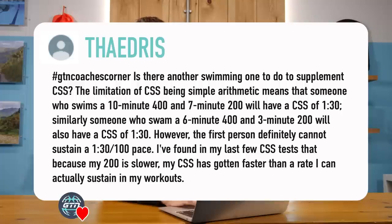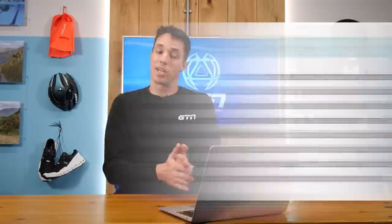Similarly, someone who swims a 6-minute 400 and a 3-minute 200 will also have a critical swim speed of 1:30. However, the first person definitely cannot sustain 1:30 per 100 pace. He found that because his 200 is slower, his critical swim speed has gotten faster than a rate he can actually sustain in his workouts.